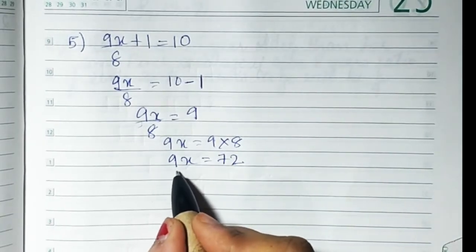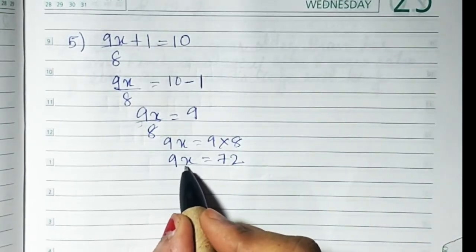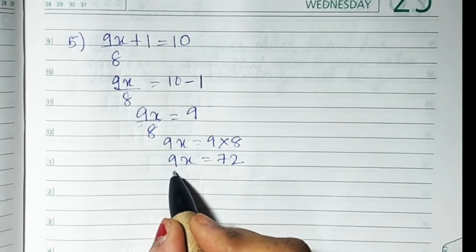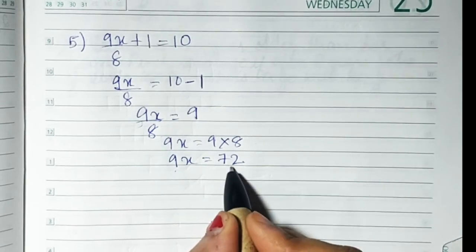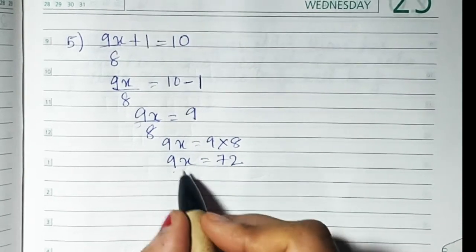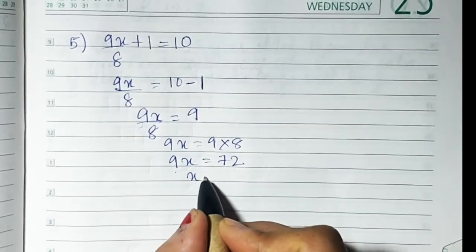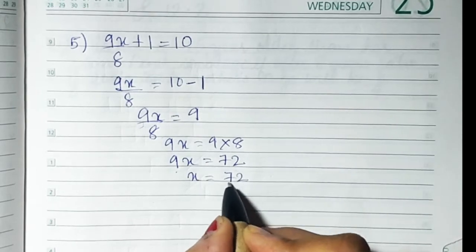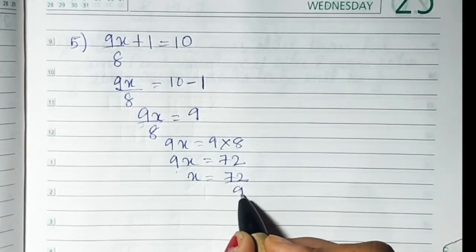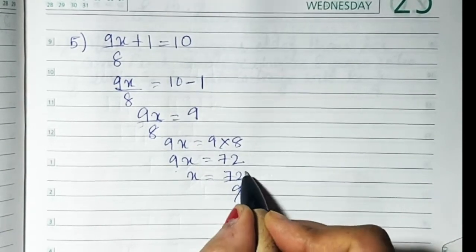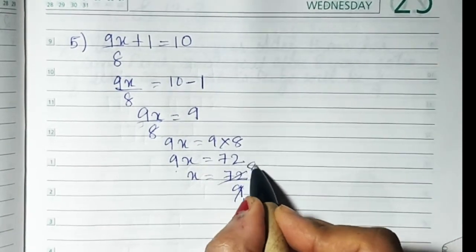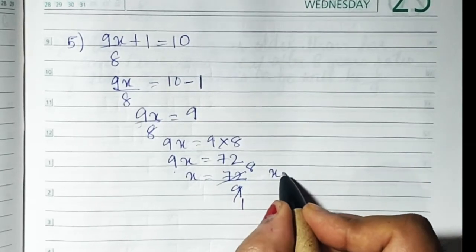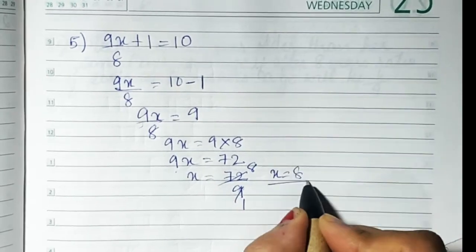Now 9 is multiplied with x. This 9 comes to the other side and becomes divided. So x equals 72 upon 9. Since 9 eights are 72, the value of x is 8.